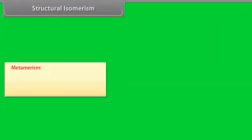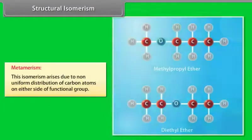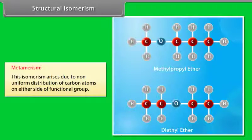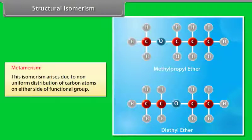Metamerism: this isomerism arises due to non-uniform distribution of carbon atoms on either side of a functional group. For example, methylpropyl ether and diethyl ether.